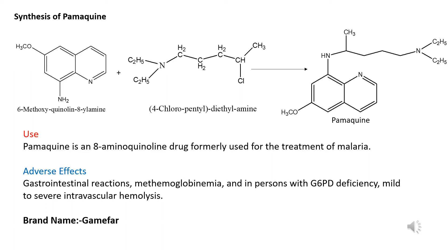The next drug is primaquine. The synthesis of primaquine is a one-step reaction in which 6-methoxy-8-aminoquinoline and 4-chloropentyl diethylamine fuse together to form primaquine. Uses: it is used for the treatment of malaria. Adverse effects include gastrointestinal reactions, methemoglobinemia, and in patients suffering from G6PD deficiency it may cause mild to severe intravascular hemolysis. The brand name of primaquine is Gamified.